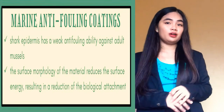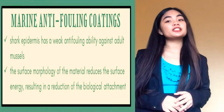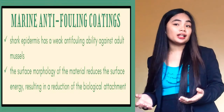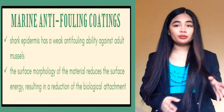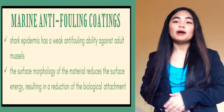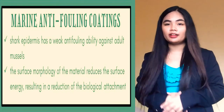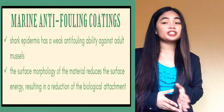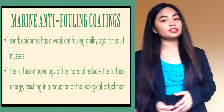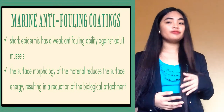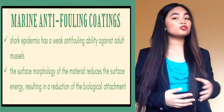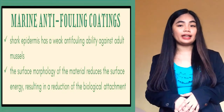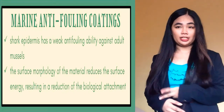Next is marine anti-fouling coatings. Biomimetic surface coatings use bionics principles to achieve an anti-fouling effect by simulating the epidermis structure of marine organisms, including sharks, shells, dolphins, and filamentous organisms. It was found that shark epidermis has a weak anti-fouling ability against adult mussels, but a certain inhibitory effect on the attachment of microscopic biological biofilms. Anti-fouling tests show that the surface morphology of the material reduces surface energy, resulting in a reduction of biological attachment. China et al. prepared anti-fouling surfaces imitating shark skin, taro leaf, and rose petal textures, and found that the anti-fouling effect of the imitation shark skin with a laminated streaming structure is clearly better than that of the regular convex and the paint texture groups.